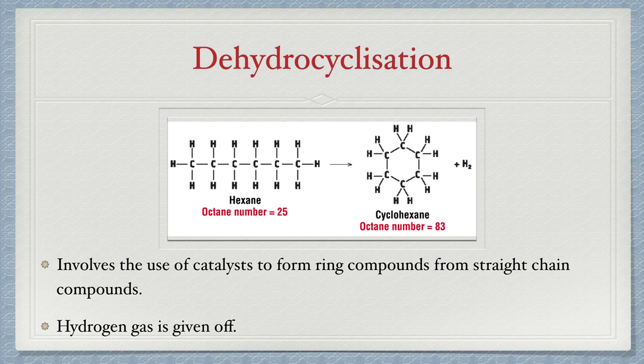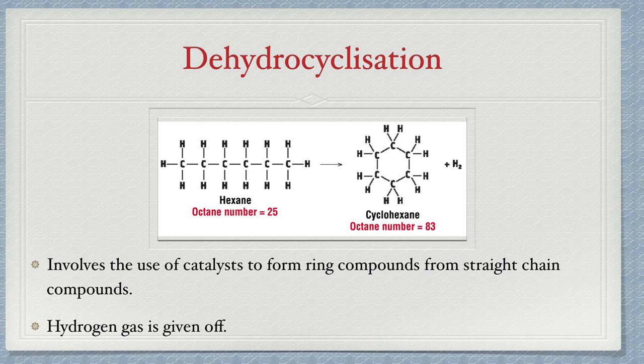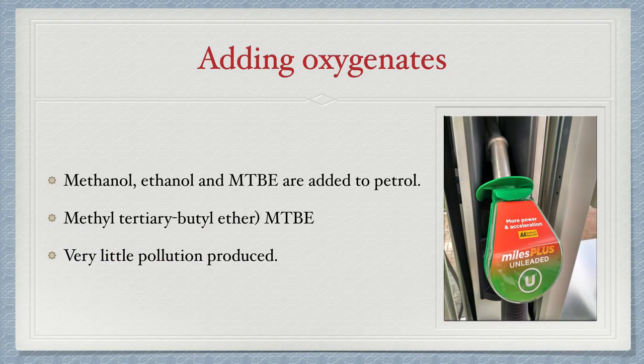Dehydrocyclisation is the changing of straight chain hydrocarbons into ring-shaped compounds. By doing so, hydrogen gas H₂ is always removed — hence the name 'dehydro'. Adding oxygenates such as methanol, ethanol, and MTBE increases octane number and has the added advantage of producing less pollution.